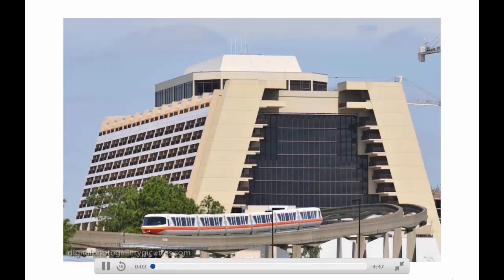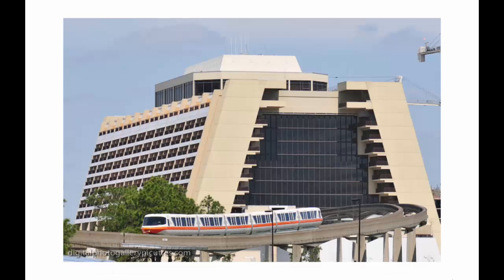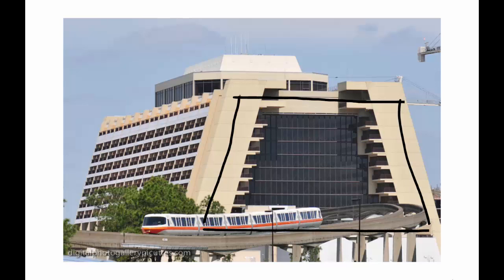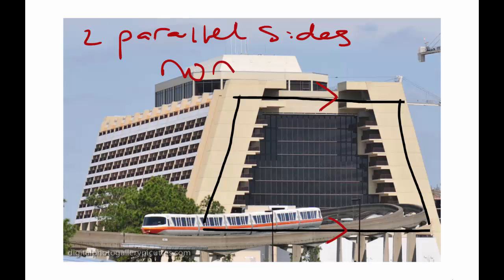Here's a nice image of the Contemporary Hotel found in Disney World in Orlando, Florida. It's an interesting building built in the 1970s, and they call it contemporary. The building structure itself is trapezoidal — it's a trapezoid. Trapezoids are quadrilaterals that have two parallel sides and then two distinctly non-parallel sides, like this side right here and this side right here.